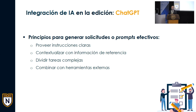A lo largo del día he tenido la oportunidad de ver que distintos compañeros han discutido principios para generar una buena solicitud, un buen prompt. Dependiendo de la función o lo que uno quiera lograr con la integración de ChatGPT, hemos identificado que los más útiles para nuestro proceso son: proveer instrucciones claras, contextualizar o dar información de referencia, dividir las tareas complejas y combinar con herramientas externas. Vamos a pasar a algunos ejemplos de cómo se aplican estos conceptos en el proceso de generación de prompts y los resultados que obtenemos.